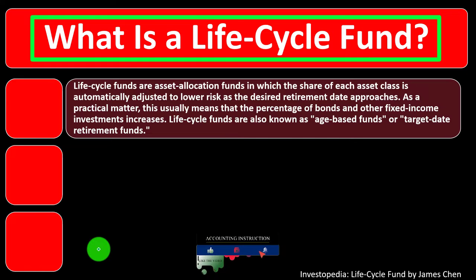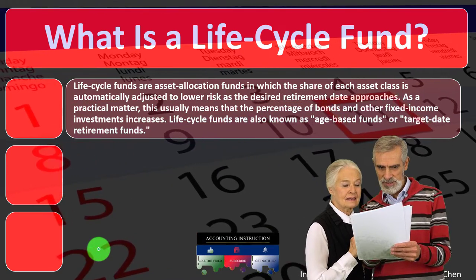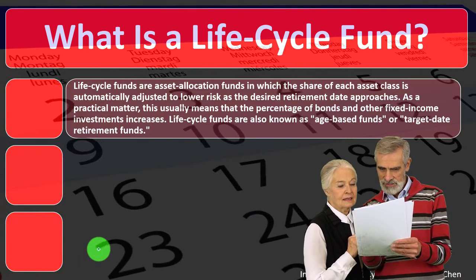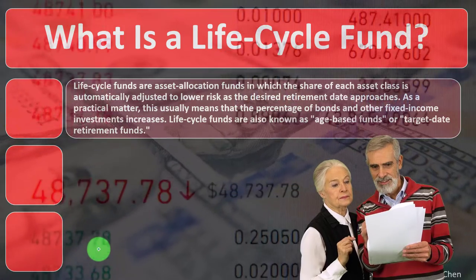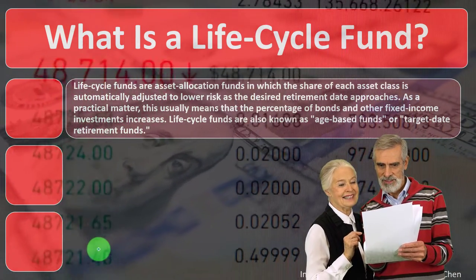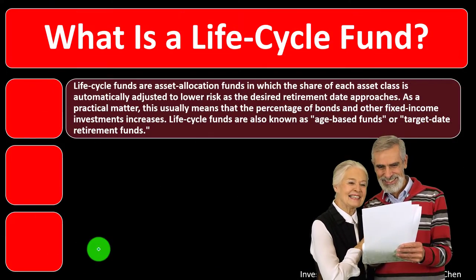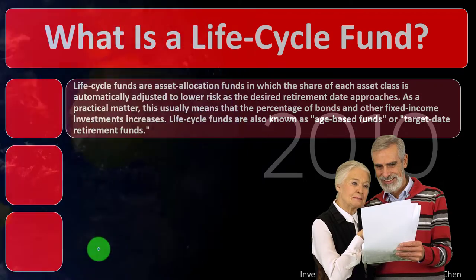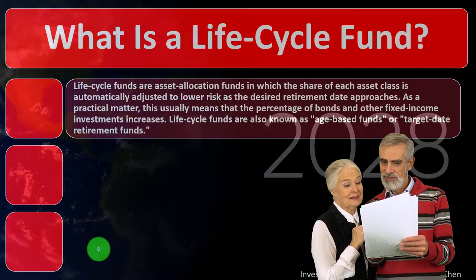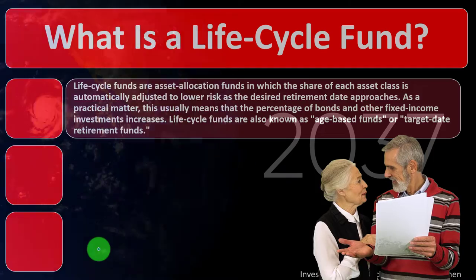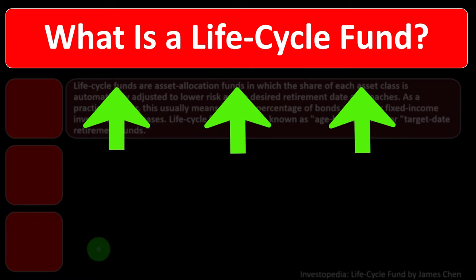The life cycle fund is an idea you might use for something like a retirement plan, where you have a target date — possibly retirement — and as you get closer to that target date there is a remixing of the fund. As we invest, the major factors that determine the optimal asset mix include how long we have until we hit the target — the time horizon — and our risk tolerance. As we get closer to that time horizon, we want to readjust our funds to be at an optimal level.